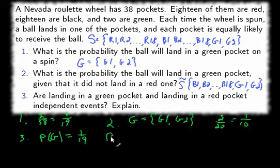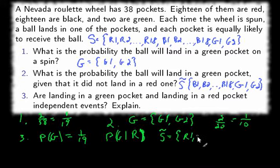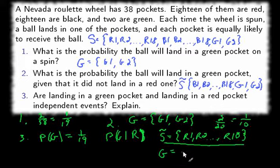So we need to work on probability of getting a green pocket given red. So we're given that it landed in a red pocket. That means the reduced sample space here is the set of red pockets: red one, red two, so on and so forth, up to red 18. Now, from this sample space, we have to find how many greens we have. And when you look through there, you find out there are none.